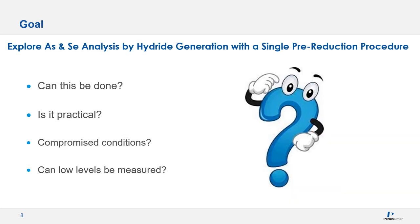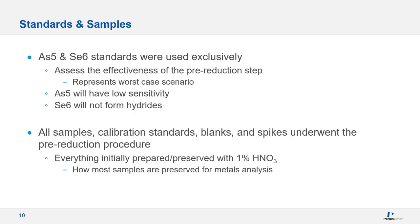The goal of this work was to explore arsenic and selenium analysis by hydride generation using a single pre-reduction procedure. We addressed four questions: Can it be done? Is it practical? Will it involve compromised conditions? Can we still measure low levels? The answer to all is yes. A single pre-reduction step is not cumbersome. It is compromised — we won't have the absolute best sensitivity for either element — but we still get good sensitivities and are able to measure low levels.